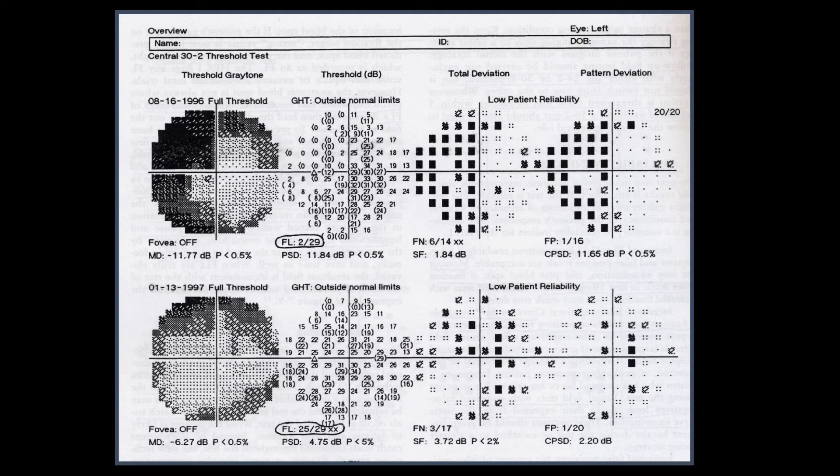In this overview printout, at the top row we have a visual field with fixation losses of 2 out of 29, and in the follow-up the fixation losses were 25 out of 29. Because of having these high fixation losses, the visual field defect has been masked.